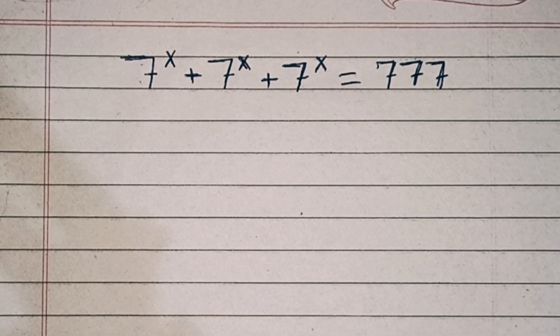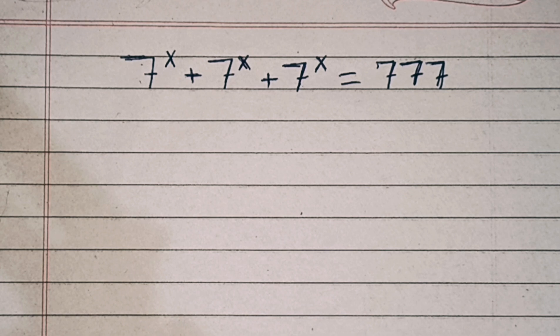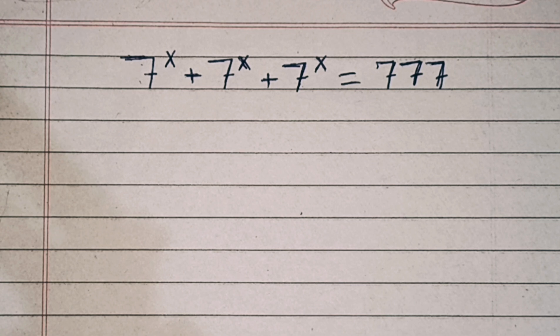Hi everyone, welcome. We have to solve the math problem: 7 power x plus 7 power x plus 7 power x equals 777. We need to find the value of x from this equation.